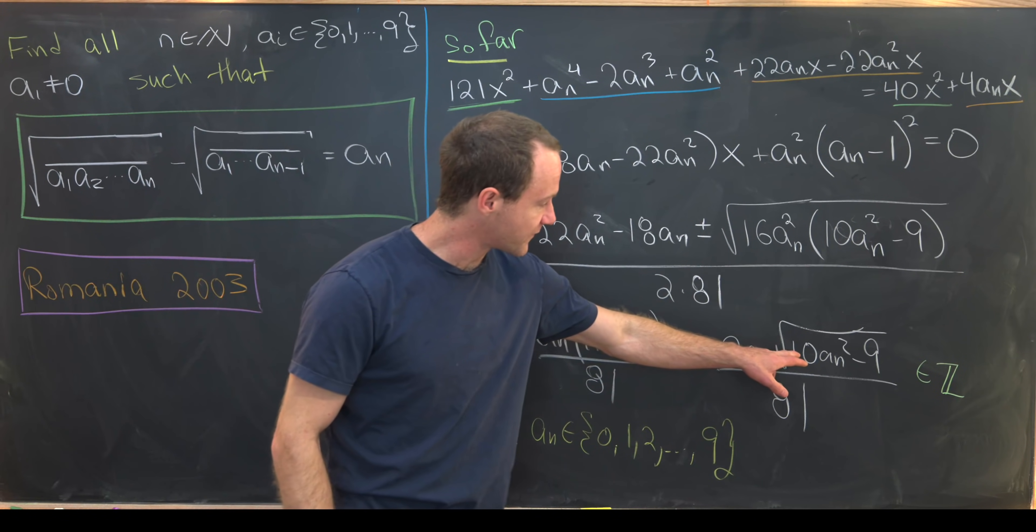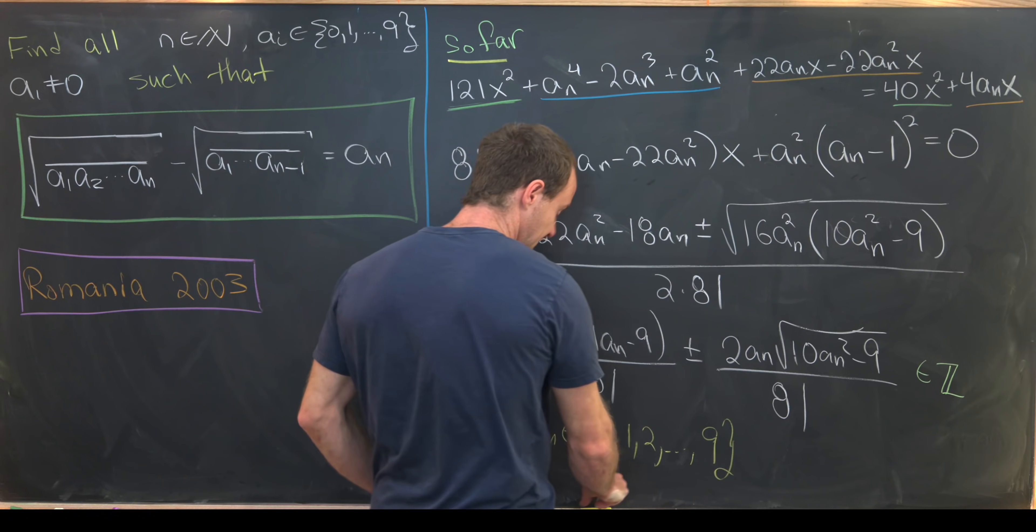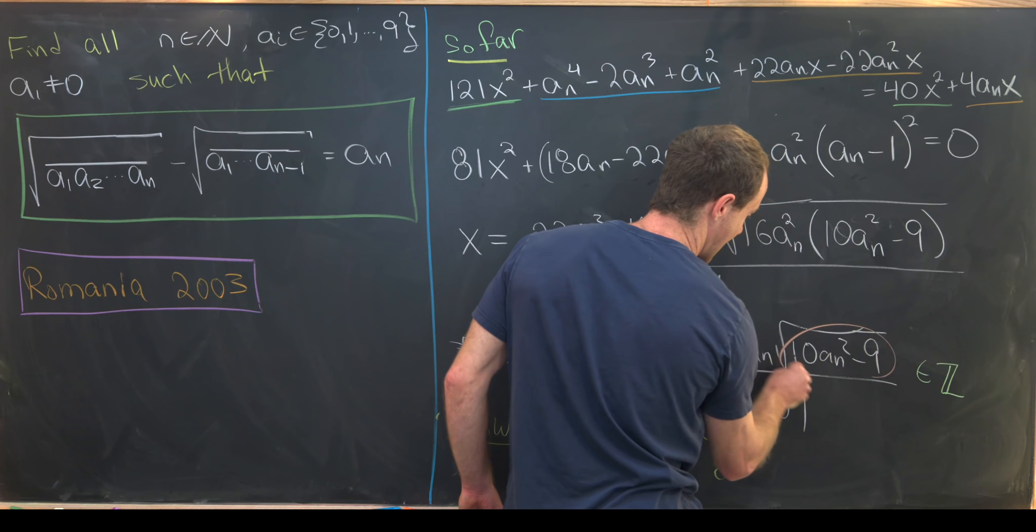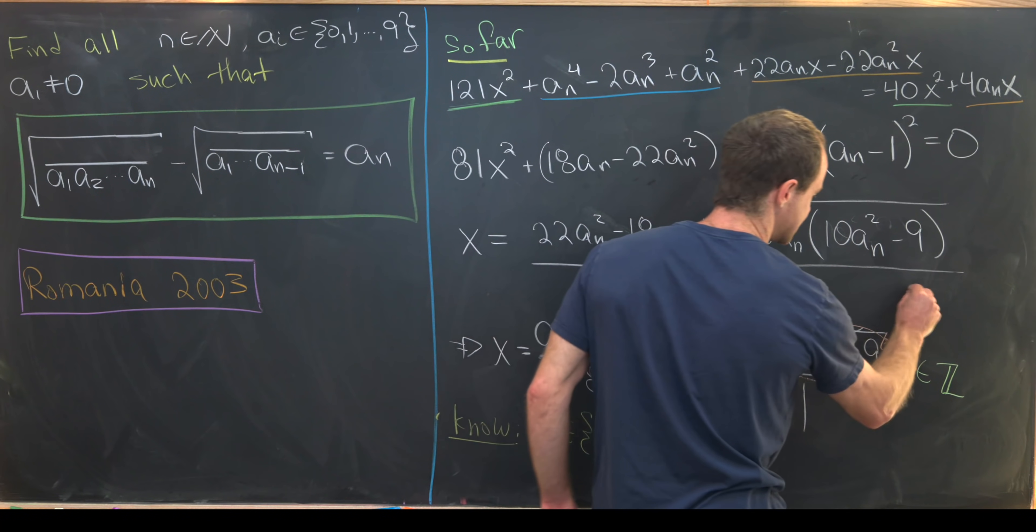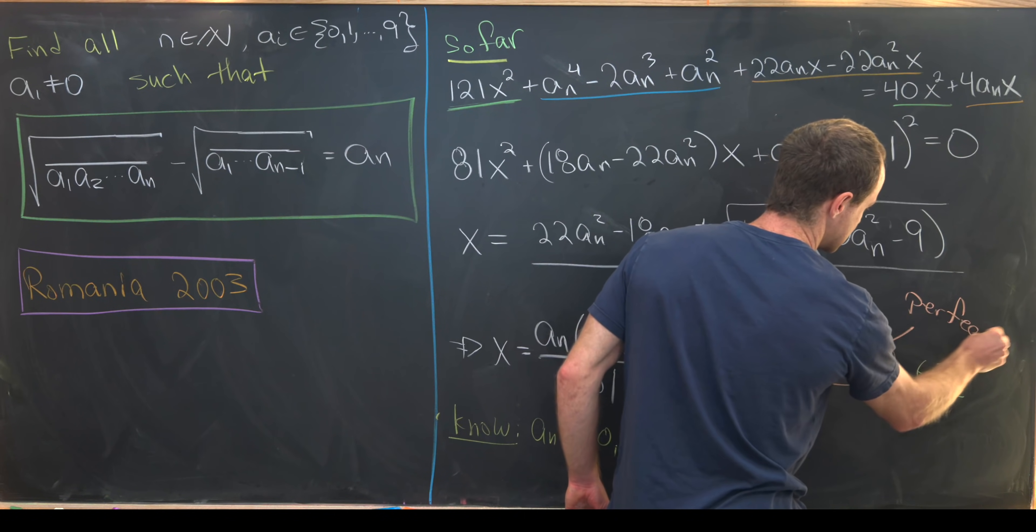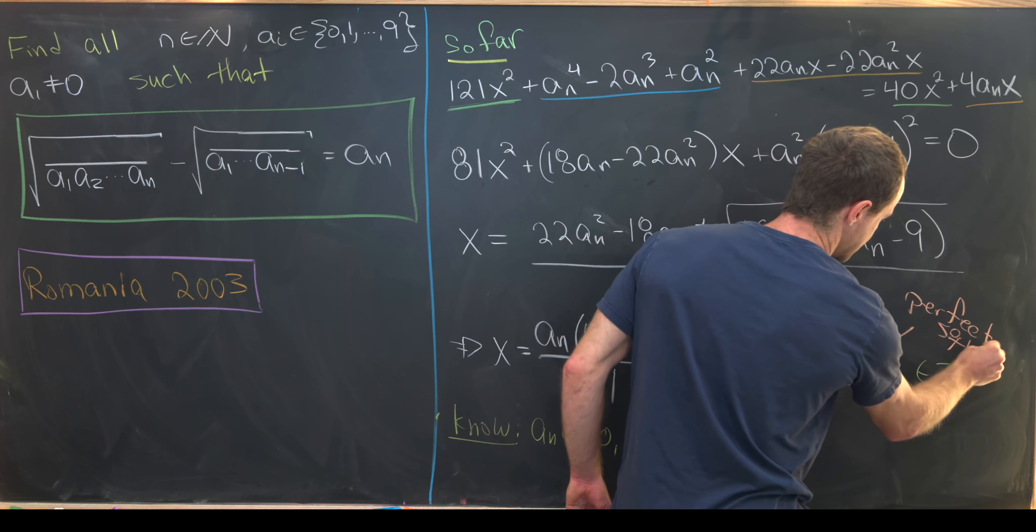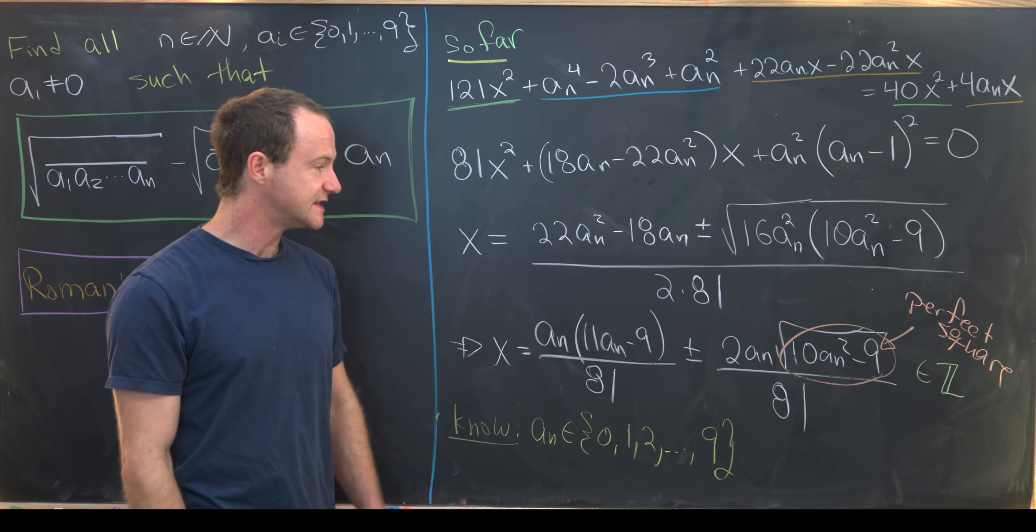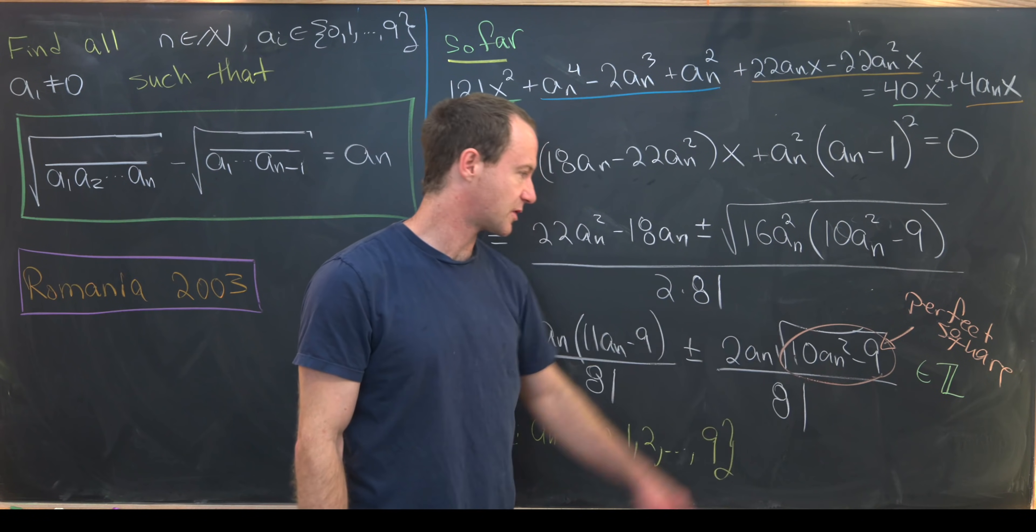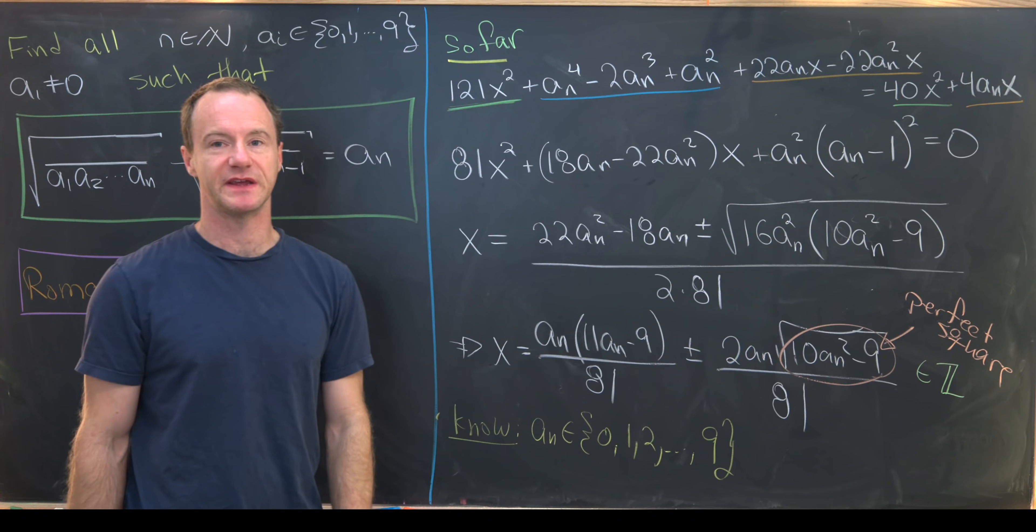Okay, but that means that we've got a perfect square inside of this radical. So let's notice that. This is a perfect square.